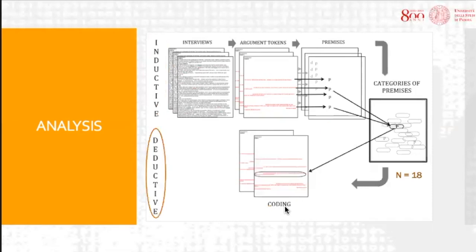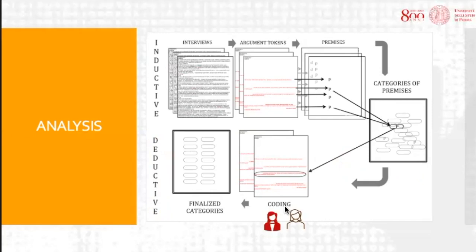Subsequently, we started a deductive process to ascertain the saturation and intersubjectivity of the categories we obtained. Two authors, independently from each other, assigned each token in the interviews to one or more of the 18 categories and were instructed to advise about the need for adding new categories. Then they met to solve disagreements in their coding. The details of the agreement-seeking process are in the paper. At the end of this process, we remained with 15 premises.